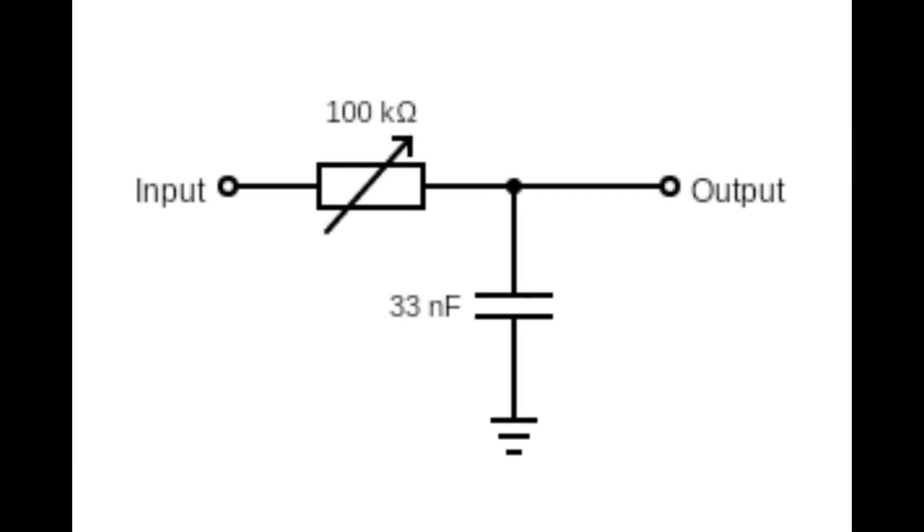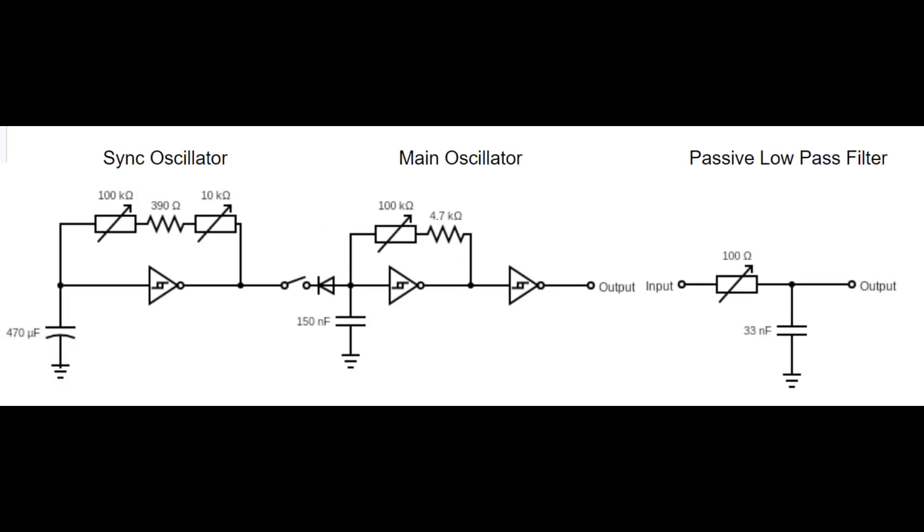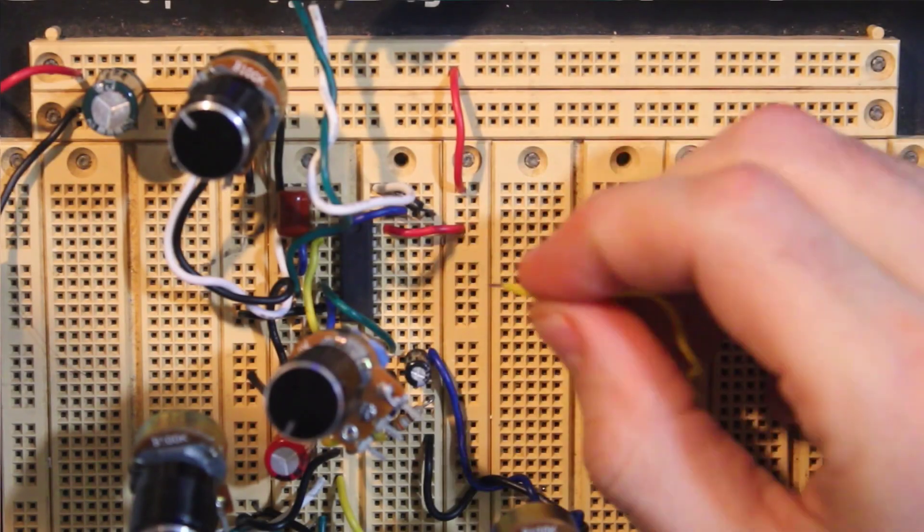A low-pass filter cuts off frequencies above a certain point. This simple circuit, consisting of a 100k ohm potentiometer and a 33 nanofarad capacitor, adds a dramatic tone effect to our square wave oscillator from a previous video.